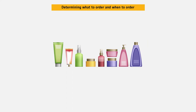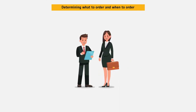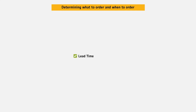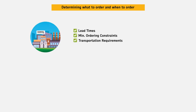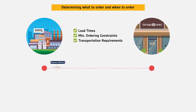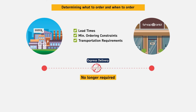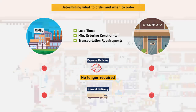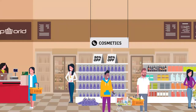ShopWorld purchases a wide range of products from Sabsal Enterprises and needs to order these at the right time and in the right quantities. Sarah and Dave are in regular communication for this. Fulfillment includes rules about lead times, minimum ordering constraints, and transportation requirements that they need to follow when placing their orders. Efficient ordering will reduce the need to create expedited orders for items between the standard order cycle, maximizing profitable order planning and execution within ShopWorld.